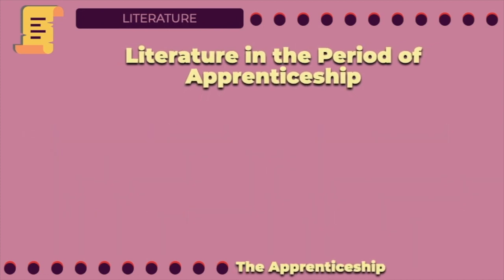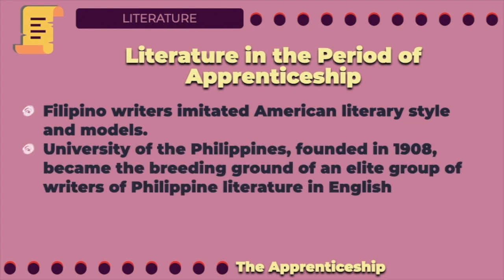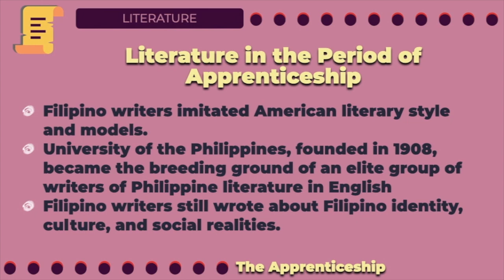The period of 1910 to 1935 is generally called the period of apprenticeship or imitation. One of the cultural aspects of the Philippines that was heavily influenced by American culture is its literature. The Filipino writers instinctively emulated the trending American literary style and models. Likewise, the University of the Philippines, founded in 1908, became the breeding ground of an elite group of writers of Philippine literature in English, which further flourished with the foundation of the UP. However, while writing in a second tongue, many Filipino writers still wrote about Filipino identity, culture, and social realities.